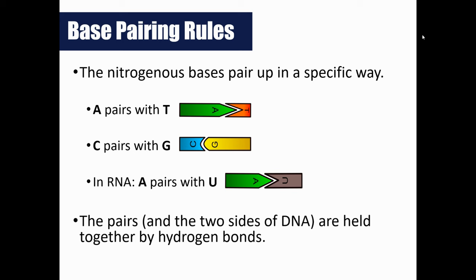Our base pairing rules: A always pairs with T — adenine and thymine pair together. C always pairs with G — cytosine pairs with guanine. Here's how I remembered it in high school: apples are found on a tree, so A pairs with T; cars are found in garages, so C pairs with G. Remember, we don't have thymine in RNA, so A won't pair with T in RNA — A will pair with U instead.